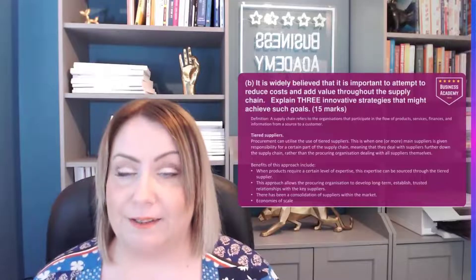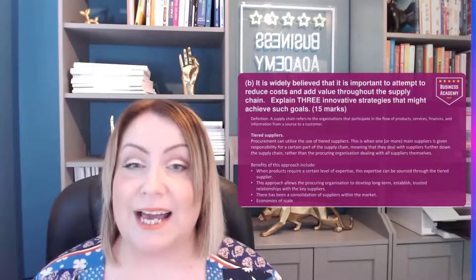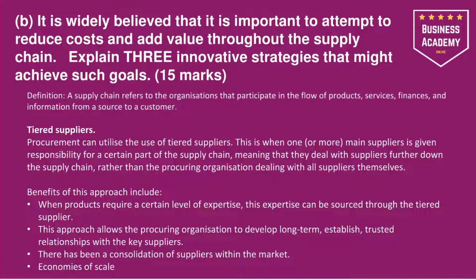Let's look at Part B. This was the trickiest one from the old qualifications that students would struggle with, so it's worth having a look at it. Part B: it is widely believed that it is important to attempt to reduce costs and add value throughout the supply chain — explain three innovative strategies that might achieve such goals. Basically, this is asking for any strategy that reduces costs and adds value. For a definition, a supply chain refers to the organisations that participate in the flow of products, services, finance and information from a source to a customer.